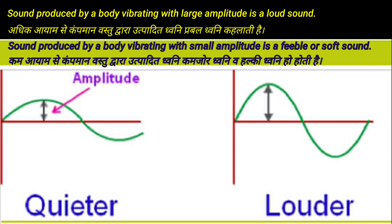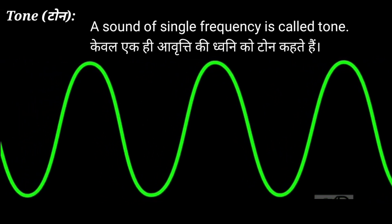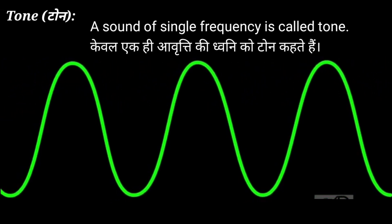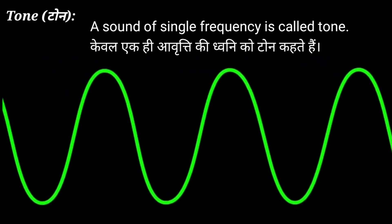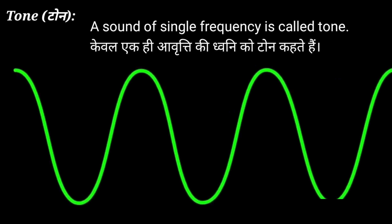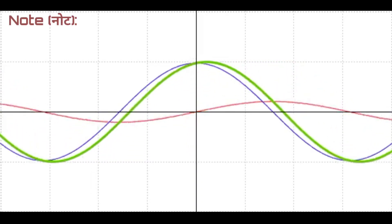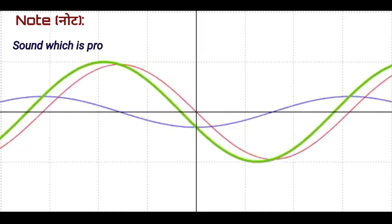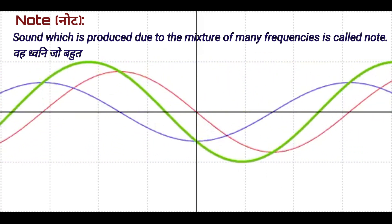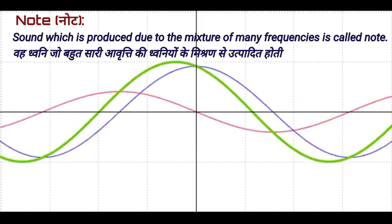The next characteristic of sound is tone. A sound of single frequency is called tone — kebal ek avriti ki dhvani ko tone kehte hain. Next is note: a sound which is produced due to the mixture of many frequencies is called a note.